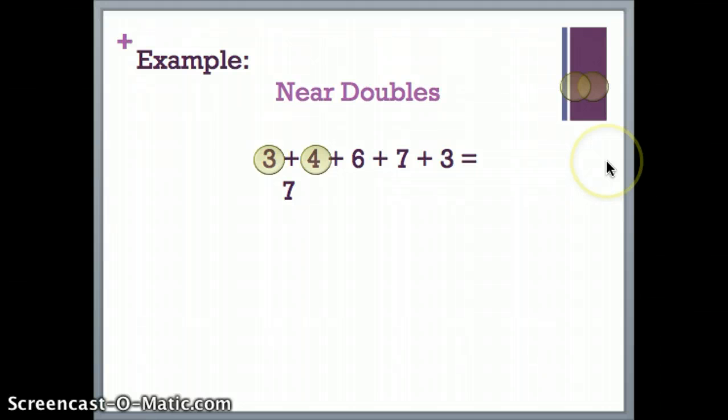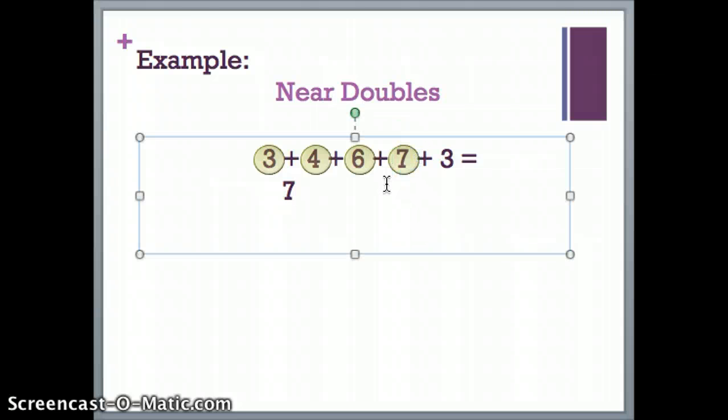If I look at my equation again, I see that 6 and 7 are still there, so I'm going to do 6 plus 7. I'm going to use the doubles fact 6 plus 6 to help me. 6 plus 6 equals 12, plus one more is 13. I still haven't added 3, so I'm just going to move that down. 7 plus 13 is 20, plus 3 more is 23, so my sum is 23.